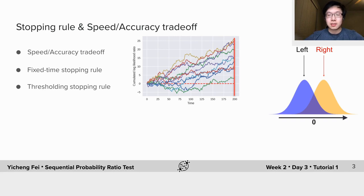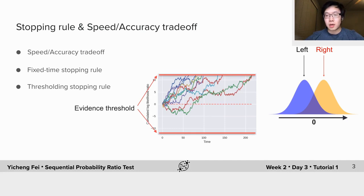It is similar in the case of thresholding stopping rule. Now we won't stop taking samples until the accumulated evidence crosses some threshold. We will show later that a threshold on accumulated evidence Sn is actually a function of the confidence level of our desired error rate.